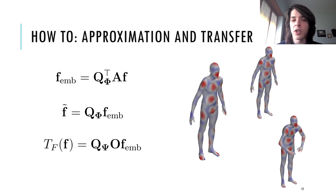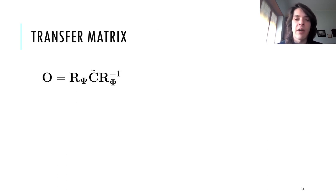We can easily derive an analytic expression for this matrix O that relies on C tilde, that is the extension of the functional map to naive eigenproducts.